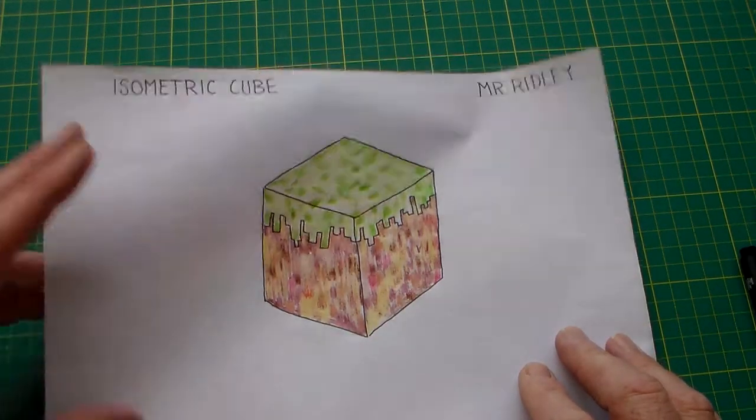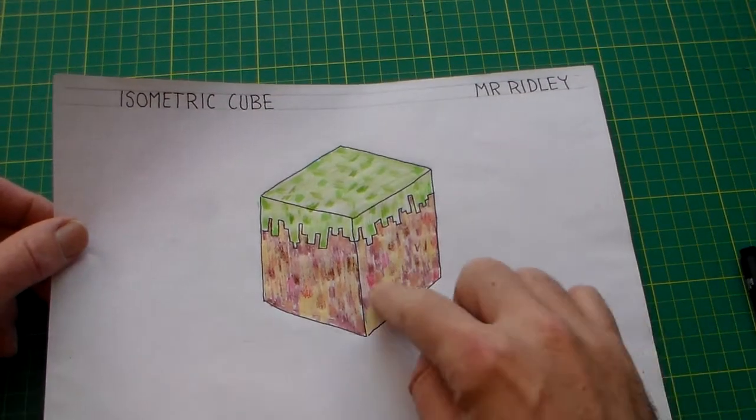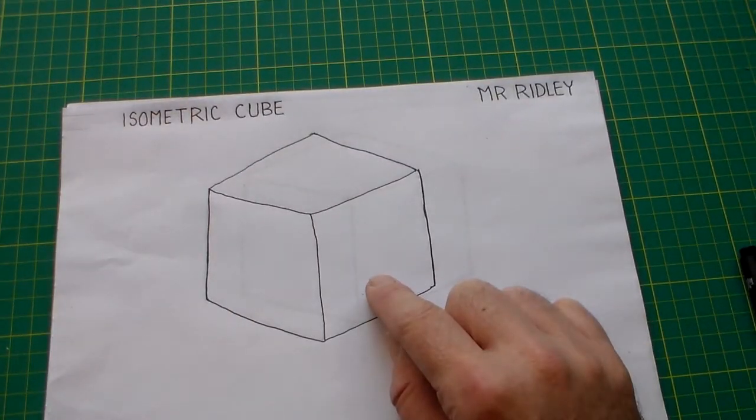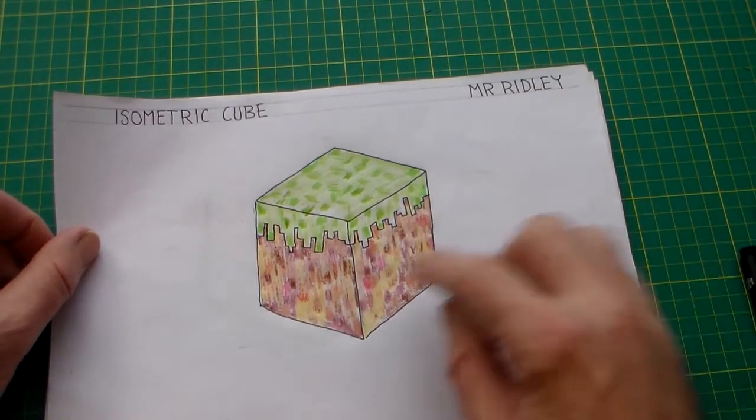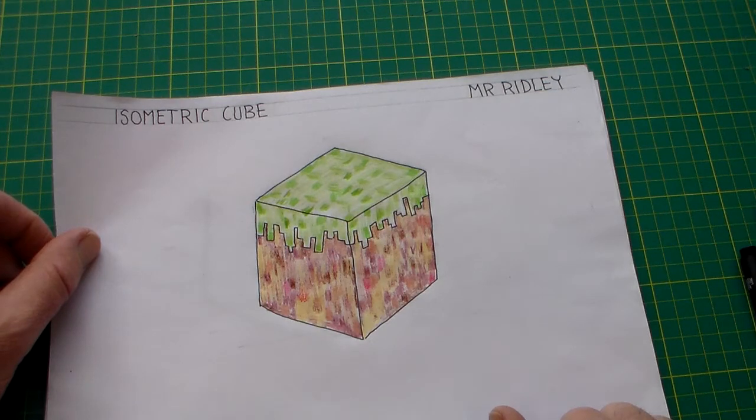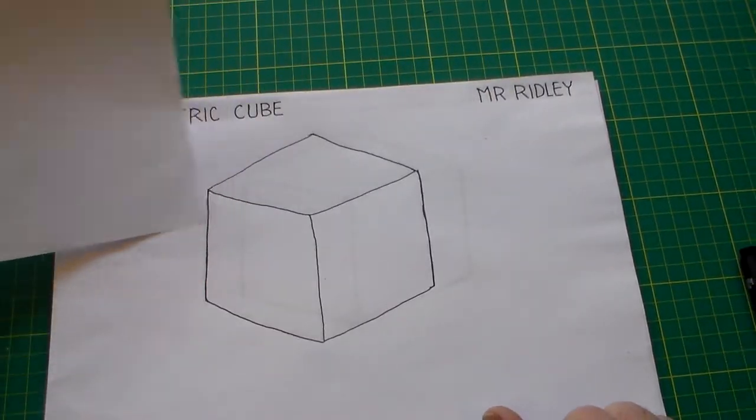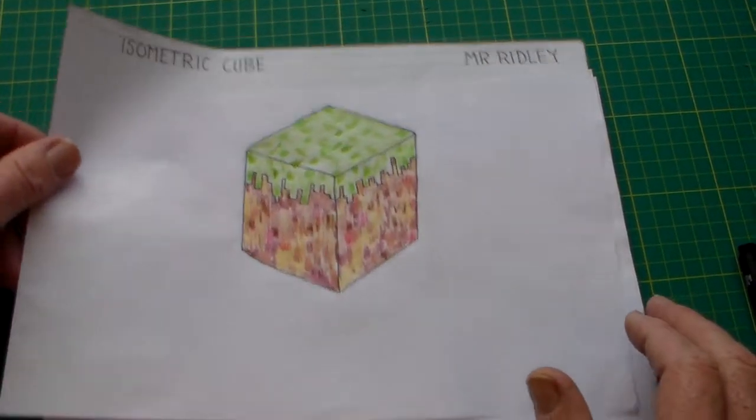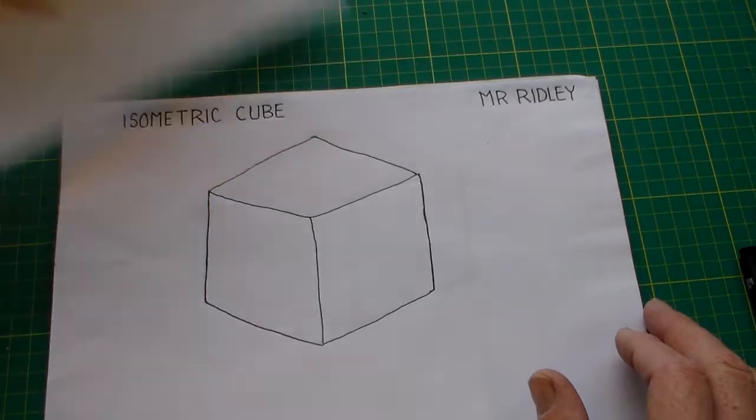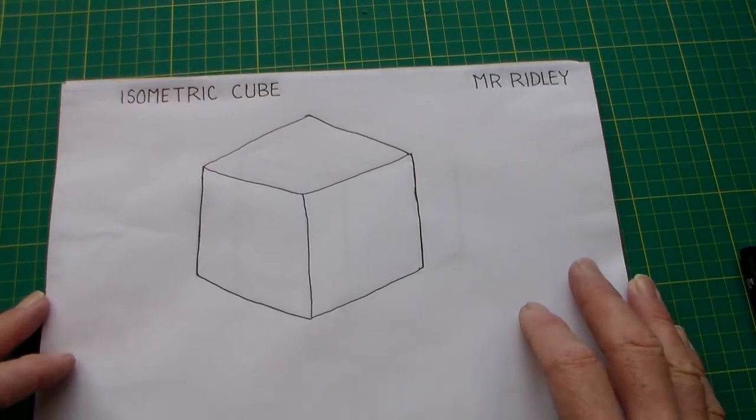So there's the isometric cube. If you want to, for additional challenge, you can think of a color scheme or rendering to render your cube isometric cube. Isometric cube completed.